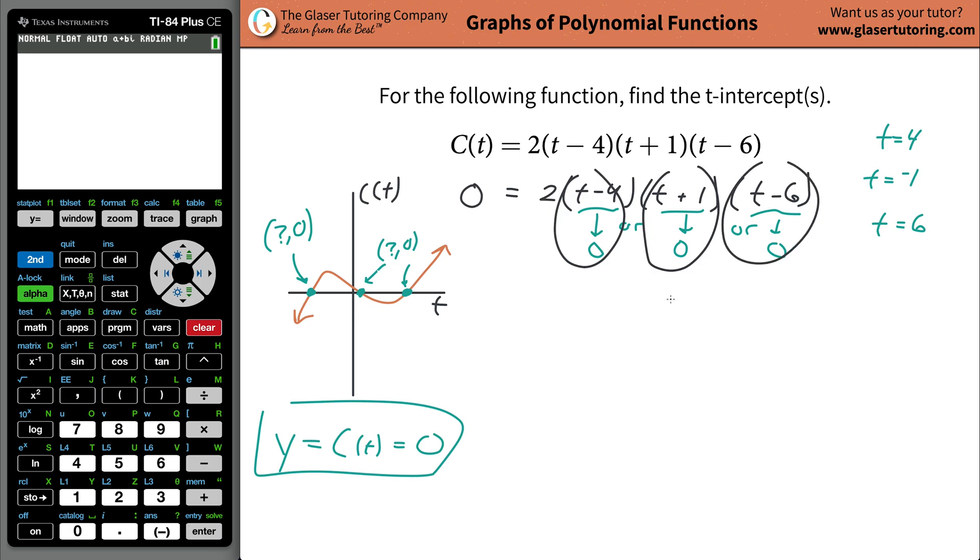So what you would now do is you would create little math equations for yourself. Because what you're saying to yourself is only if this term could somehow equal zero. Well, write that out. What does that even mean? Mathematically, it means T minus four equals zero.